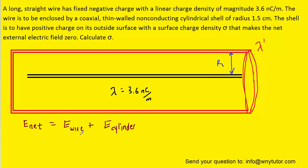Now because both the wire and the cylinder are charged, they're both going to be producing electric fields. And we know that the net electric field would be the sum of the electric field produced by the wire and that produced by the cylinder.